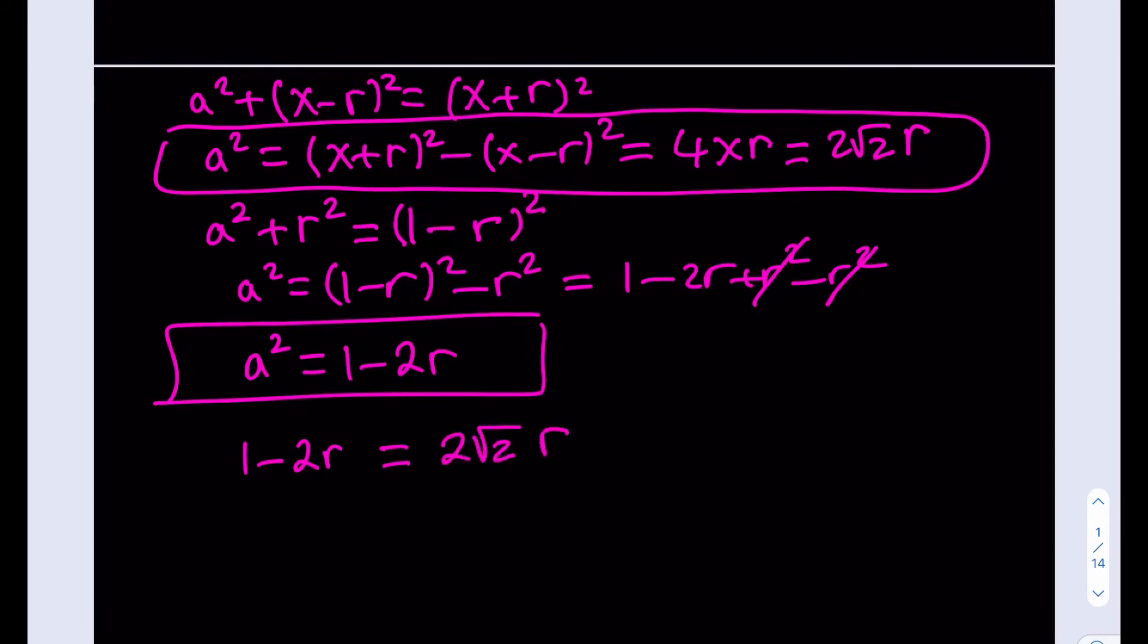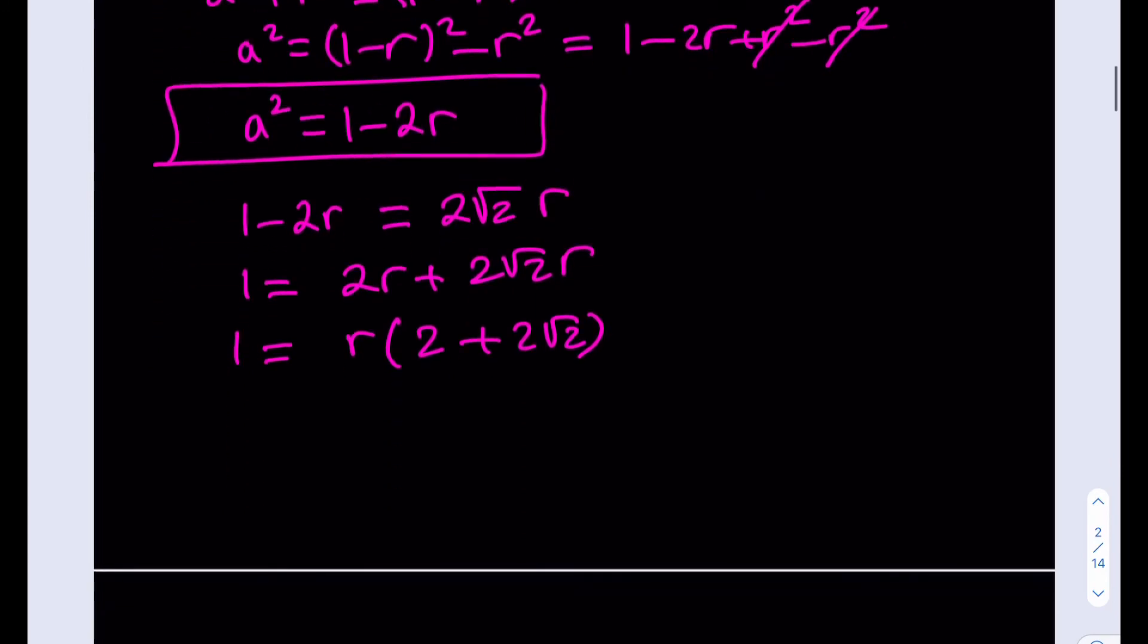And I'm trying to solve for r. This is really cool. Let's go ahead and add 2r to both sides. Then I'm going to go ahead and factor out the r. That's going to give me 2 plus 2 root 2. And if I divide both sides by 2 plus 2 root 2, then I'm going to get the answer. So r is going to equal 1 over 2 plus 2 root 2.